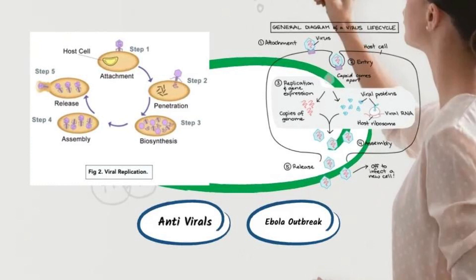To recap: lysogenic viruses integrate their DNA or RNA as a provirus into the host cell's DNA, enabling viral DNA or RNA to be replicated using the host cell's machinery. This is the stage where latency can occur — viruses stay dormant within the host cell, sometimes due to repressor proteins which inhibit viral transcription. Lytic viruses cause lysis of the host cell once a large number have been replicated and assembled. When a lysogenic host cell is damaged by the immune system or the body is weakened, dormant viruses can move from the lysogenic cycle to the lytic cycle, leading to lysis and spread of the original latent infection.